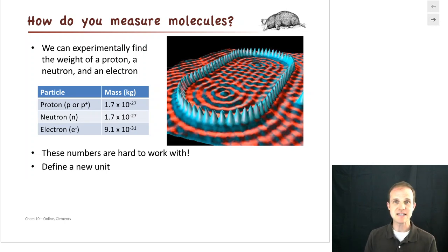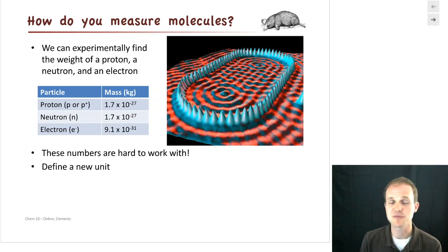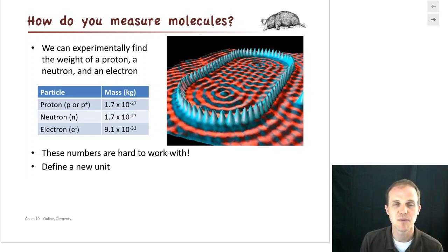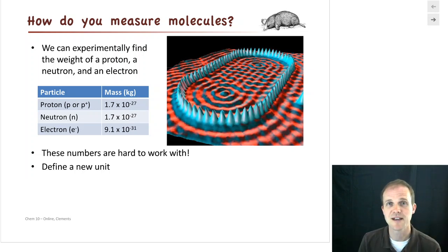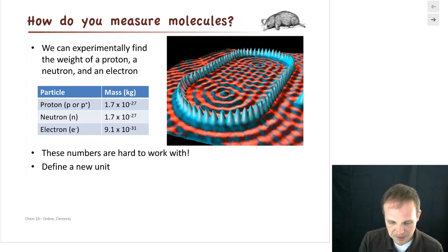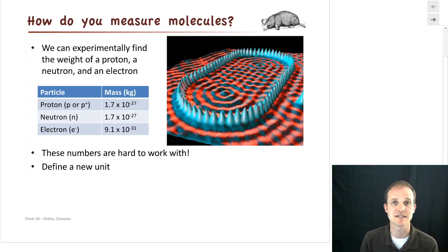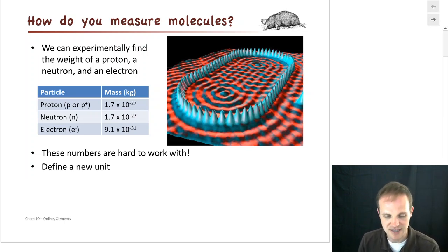Well, it's crazy, but people have done it. Now, we'll never see an atom — no one will ever see an atom — but we can see the collections of them. You can see me; I'm made of atoms. So people have done neat work and they figured out how to measure the mass of protons, neutrons, and electrons, and that's within this little table right here.